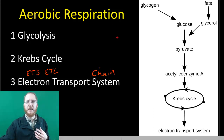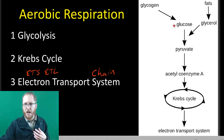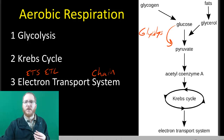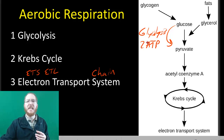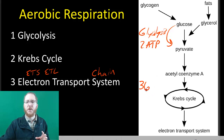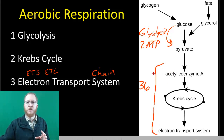This aerobic process produces way more ATP. Glycolysis — glucose to pyruvate — produces our two ATP, which you get even in anaerobic conditions. The Krebs cycle and electron transport system then produce up to 36 additional ATP. But you can only do those steps if oxygen is present.